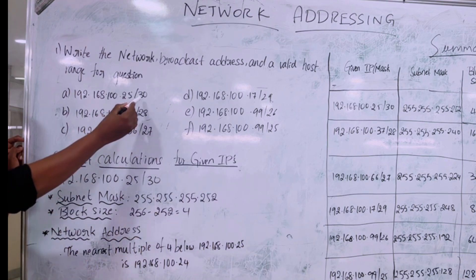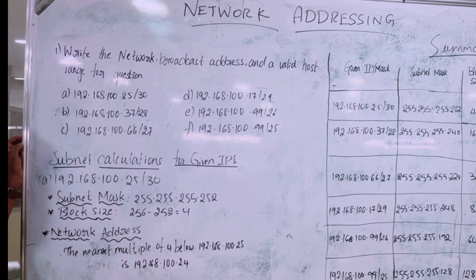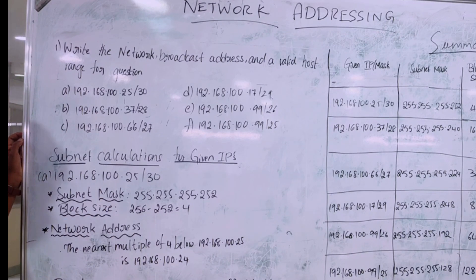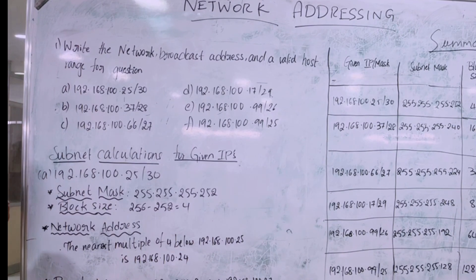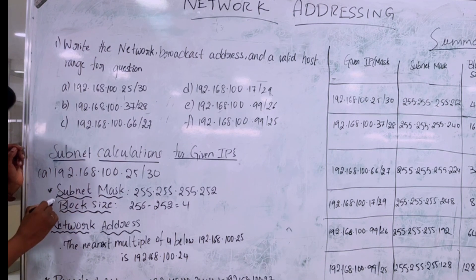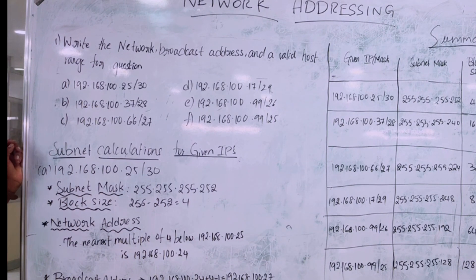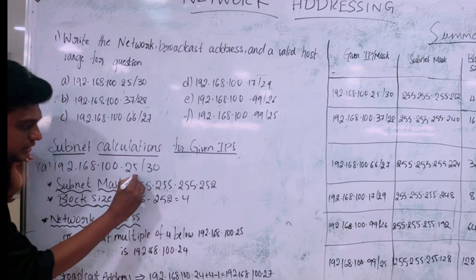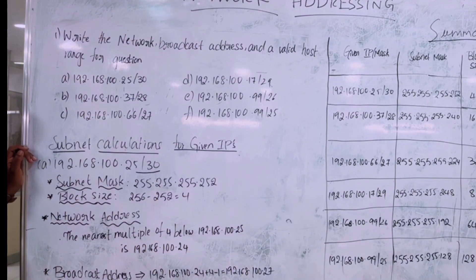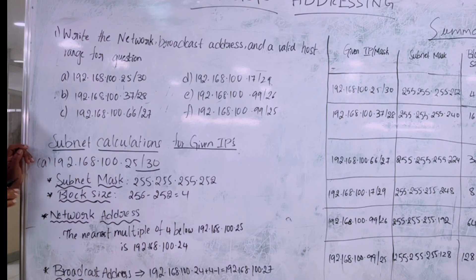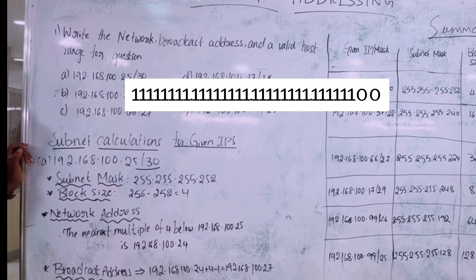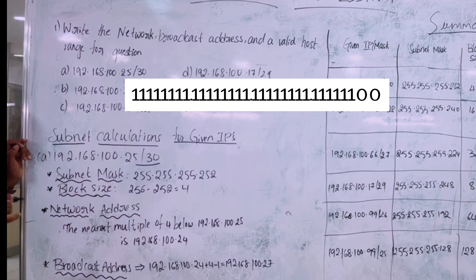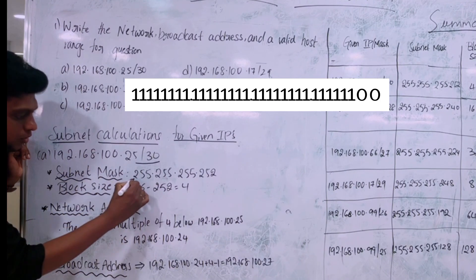The slash 30 represents the subnet mask. The subnet mask helps to identify the network ID and the host ID. To calculate the subnet mask, we take slash 30, which means in a 32-bit range, the first 30 bits are set to ones and the remaining bits are set to zeros.